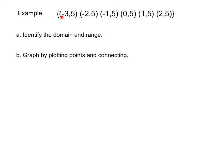Given this example here, this set of ordered pairs, and they want us to identify the domain and range. So remember this is the x and the y values. So the domain would be negative 3, negative 2, negative 1, 0, 1, and 2.